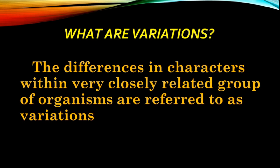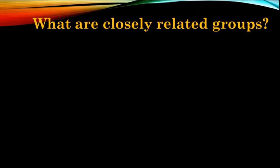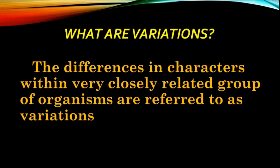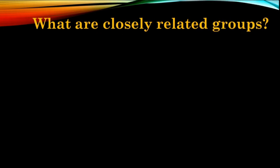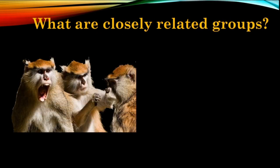Variations: the differences in characters within a very closely related group of organisms are referred to as variations. That is the textbook definition, and we need to understand the concept behind it. First, we need to know what is meant by 'closely related groups,' since the definition specifically says 'differences in characters within a very closely related group of organisms.'